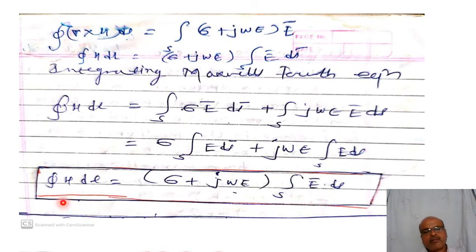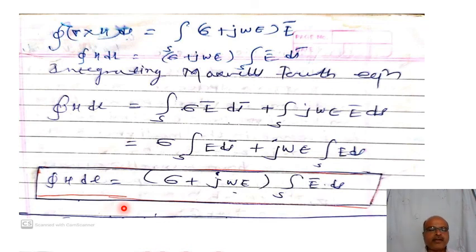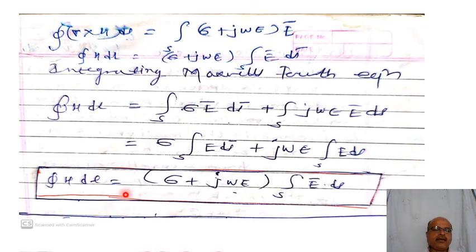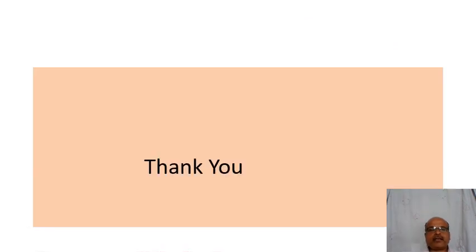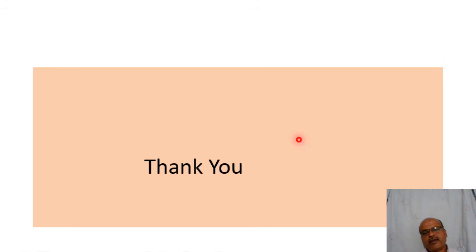So we have now presented Maxwell's equations in phasor form — both in point form and integral form. These equations are also called Maxwell's equations for harmonically varying fields. The procedure is straightforward, but you need to practice in order to recall these phasor equations in the exam. Thank you.